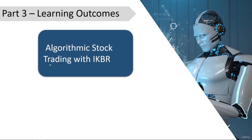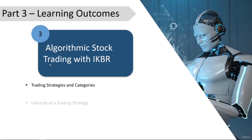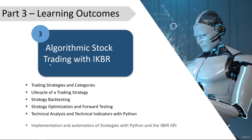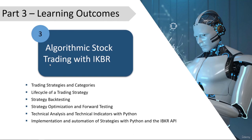Welcome to Part 3 of the course, which is all about income generation with algorithmic stock trading. We'll cover an introduction to trading strategies and different categories, including technical trading, statistical arbitrage, and more. You'll learn the life cycle of a strategy from idea generation to income generation. The most important steps are strategy backtesting, strategy optimization, and forward testing — you should only trade strategies with a high likelihood of success.